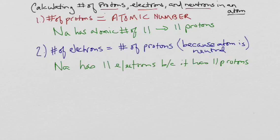So here we write down that sodium is going to have eleven electrons because it has eleven protons. Now probably the most complicated thing to determine here is the number of neutrons.